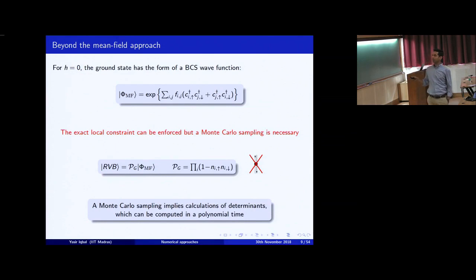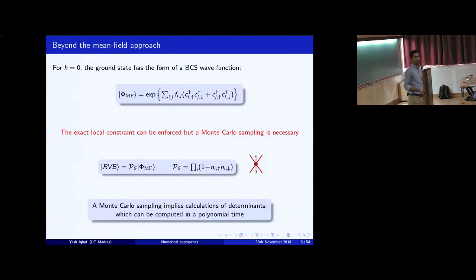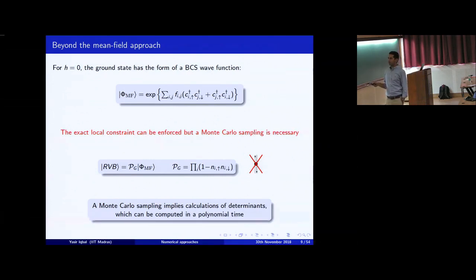When the antiferromagnetic field h is 0, you have the simple BCS-type wave function with pairing amplitudes. The exact local constraint is then enforced by Monte Carlo sampling with the Gutzwiller projector, which acts and kills all doubly occupied sites. Nobody knows analytically what the effect of the projection is — it's like a hard hammer: you hit and get something highly non-trivial. But this can be done exactly, and you can land up with a legitimate trial wave function living in the correct Hilbert space after projection. The Monte Carlo sampling means you are calculating determinants, and unlike permanents from the bosonic representation, determinants can be computed in polynomial time.